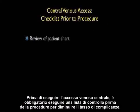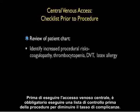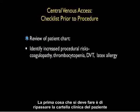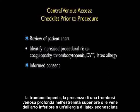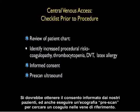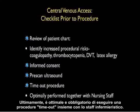Before performing central venous access, it is mandatory to perform a checklist prior to the procedure to decrease the complication rate. One should review the patient chart for increased procedural risks such as coagulopathy, thrombocytopenia, the presence of a DVT within the upper or lower extremity veins, or a known latex allergy. Informed consent should be obtained, a pre-scan ultrasound performed to look for clot in the targeted veins, and a timeout procedure completed together with the nursing staff.